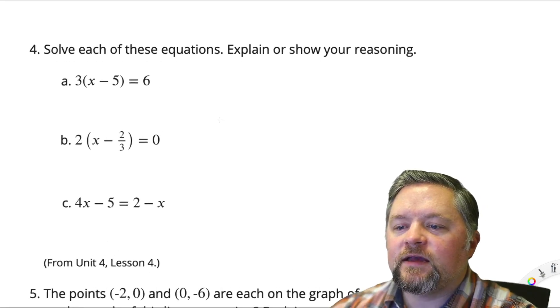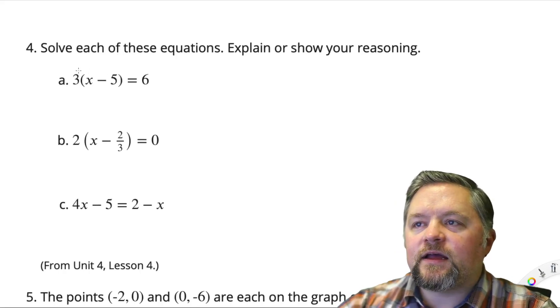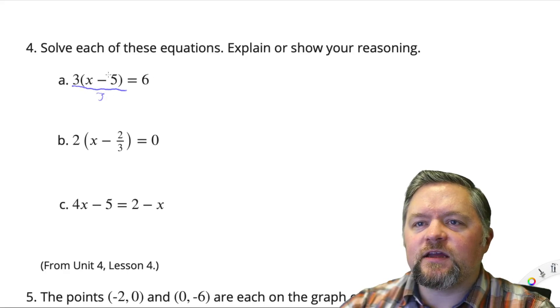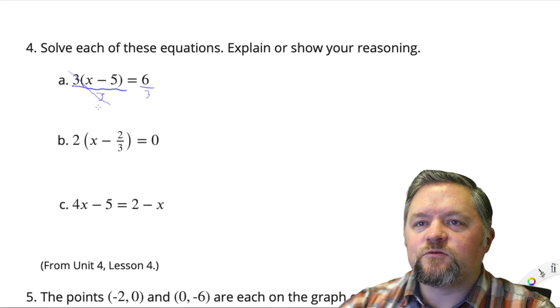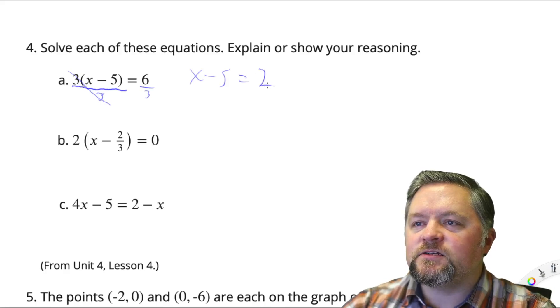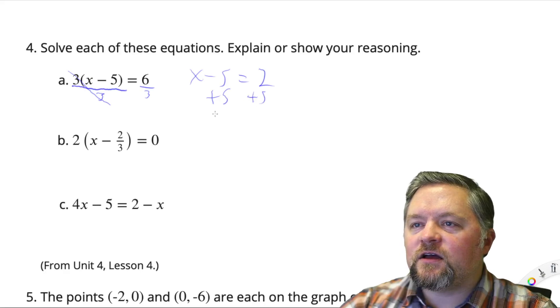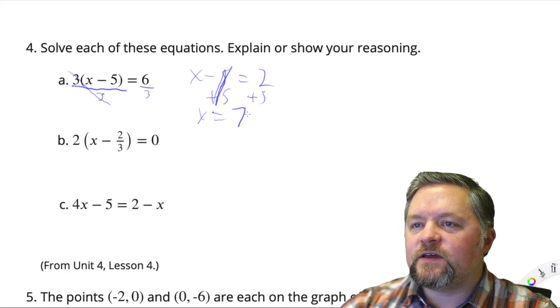Okay. Solve each of these equations. Let's start out by dividing each side by 3. Then I can get rid of that and not need to distribute. Those will cancel. And then we have x subtract 5 equals 6 divided by 3 is 2. Add 5 to each side. x equals, because those canceled, 2 plus 5 is 7.